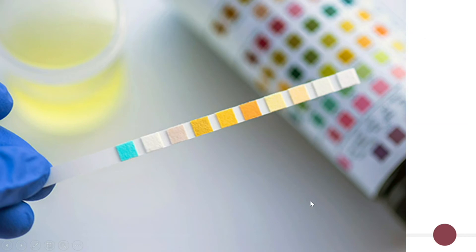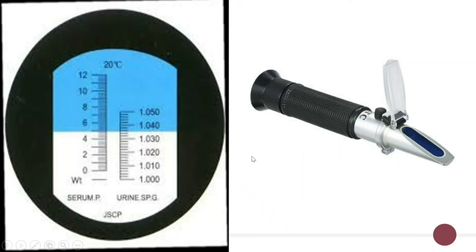This is a urinalysis dipstick. They're very simple — you put little drops of urine on each of the indicator strips, wait 30 to 60 seconds, and then compare the results to the normal and abnormal colors shown on the box. This is a refractometer used to measure specific gravity. You put a small drop of urine on it, hold it up to the light, and look at where the line falls.